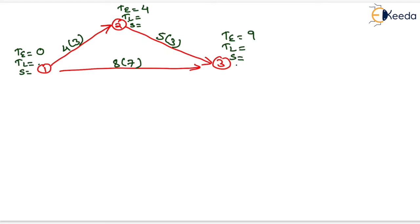TL is not given in the question, so we take it as equal to TE, which is 9 for event 3. TL for event 2 is 9 minus 5, which equals 4. TL for event 1 is the minimum of 4 minus 4 equals 0 and 9 minus 8 equals 1, so TL equals 0. Slack equals TL minus TE and is 0 for all events, so the critical path connects all events with zero slack.